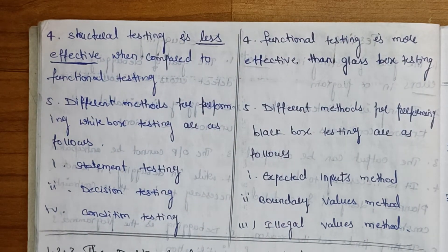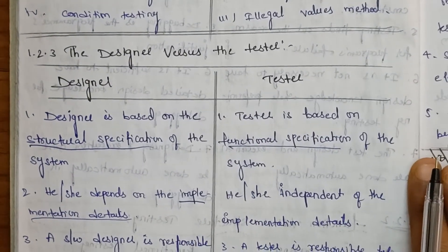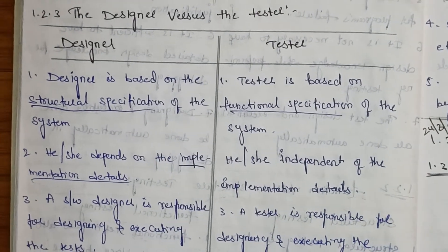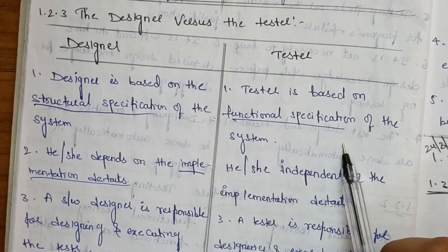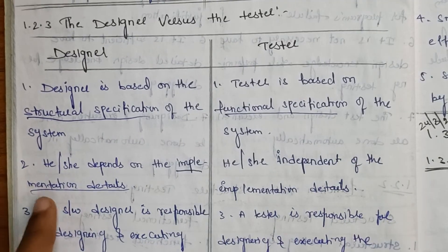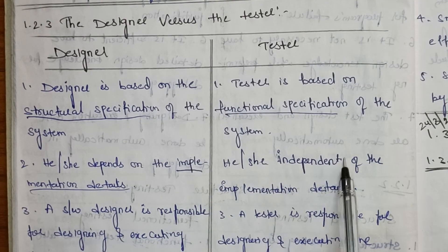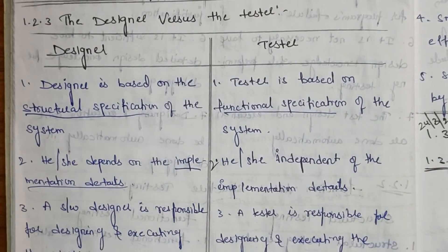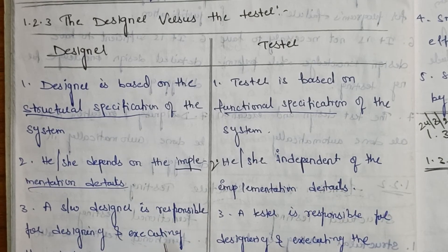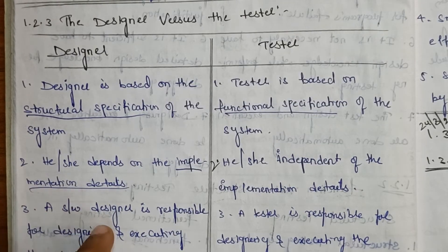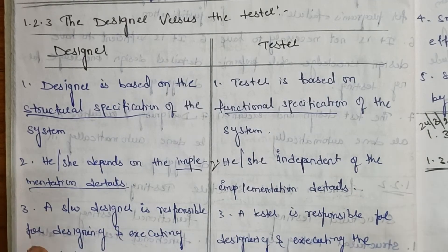Next is designer and tester. The designer is based on the structural specification of the system. The tester depends on the functional specification. The designer is independent of the implementation details, whereas the tester depends on the implementation details. The software designer is responsible for designing and executing the tests, and the tester is responsible for designing and executing the tests from the tester's side. These are the differences between designer and tester.